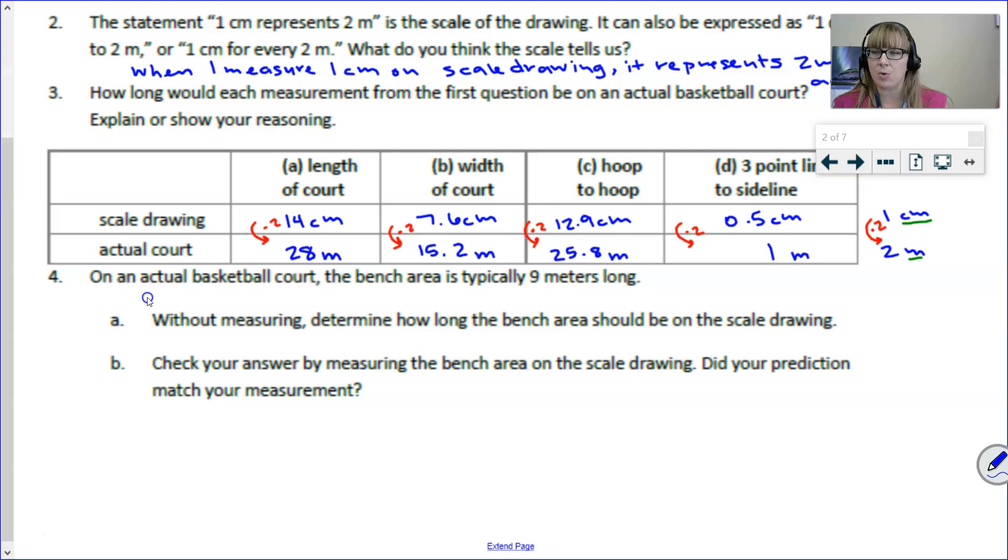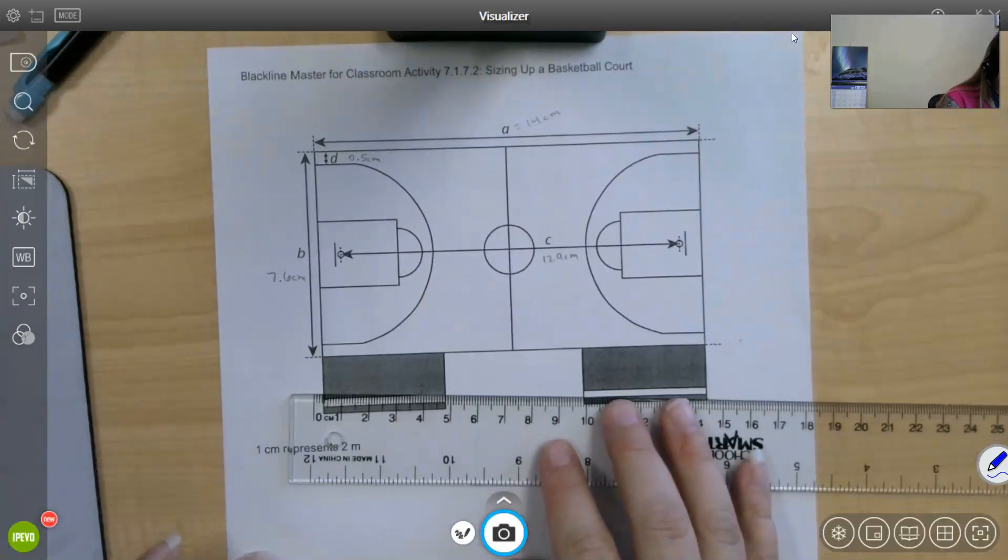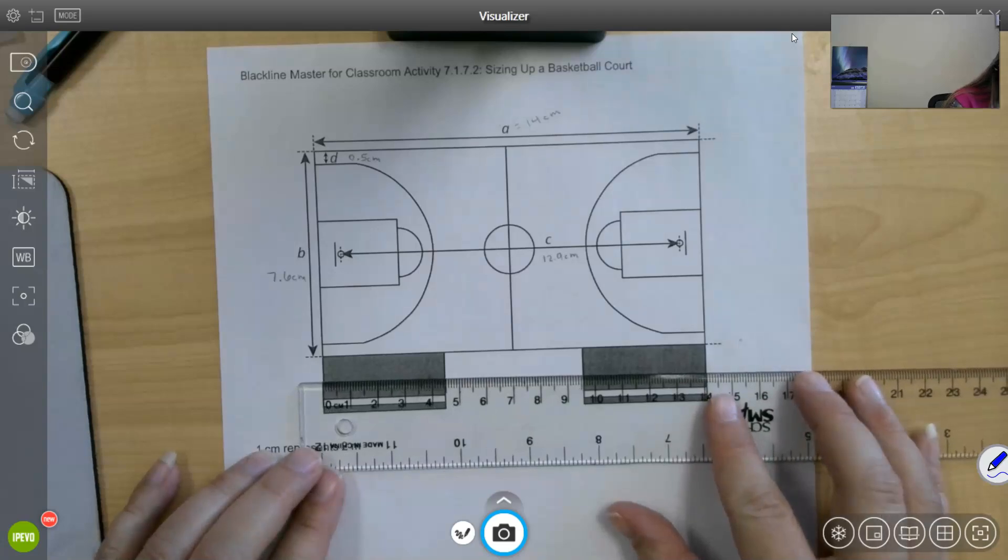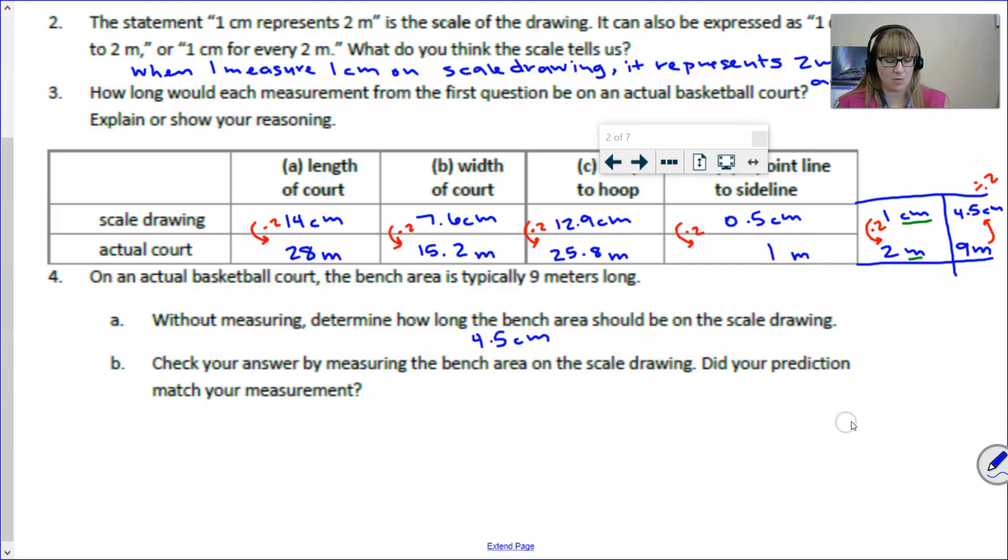To extend this further, on an actual basketball court, the bench area is typically 9 meters long. So, I'm going to add that to our table here. So, think about this. When I'm going forwards, I'm multiplying by two. So, if I'm going to be going in reverse order, that means I'm going to want to do the reverse operation and divide by two. 9 divided by two, I would guess that on our drawing, it's going to be 4.5 centimeters. And now, let's actually measure that. The bench area is this part here in gray. And we can see that it is indeed 4.5 centimeters. It's nice when things match up and work just like we predict.